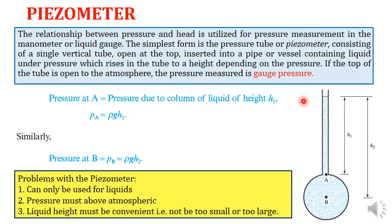If the atmospheric pressure is taken as a datum reference, then we can say it is a gauge pressure. This was discussed in part one of the chapter, where we discussed different types of pressures and how the definition of pressure changes depending on the datum or reference point about which you are measuring the pressure.